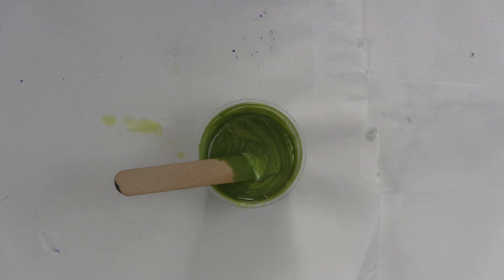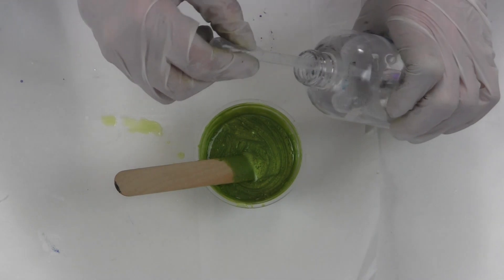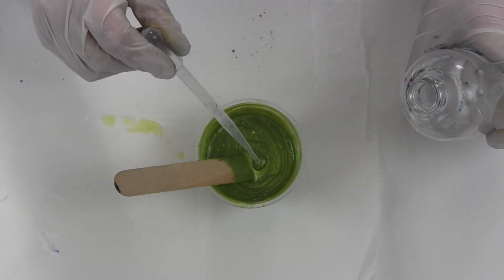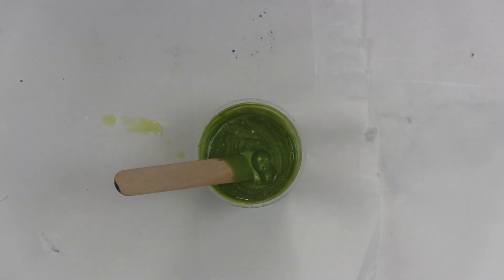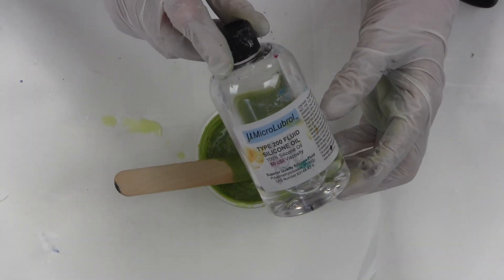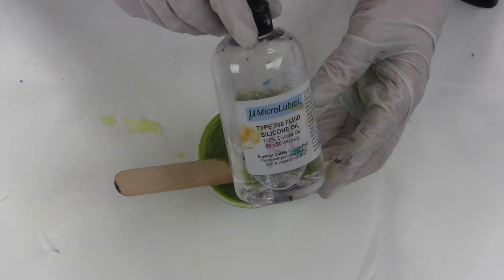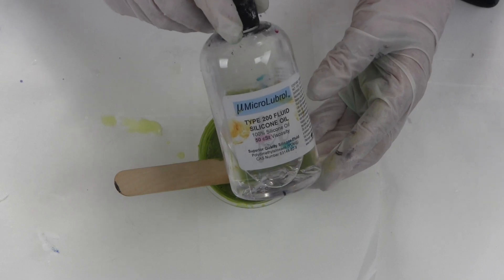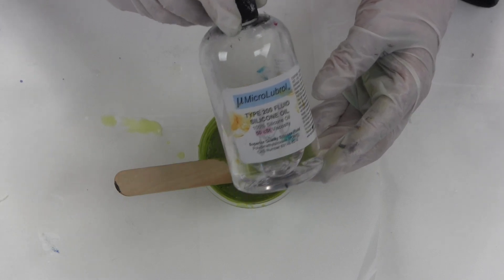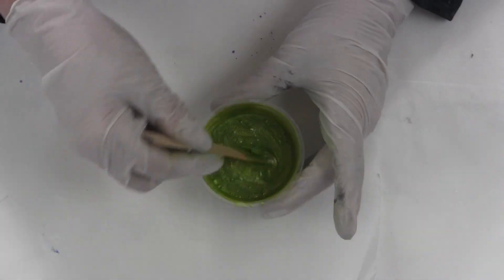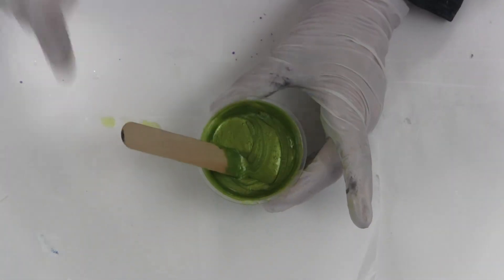I'm going to put in some treadmill oil with my handy-dandy pipette. I got this on Amazon - Macroluberotype 200 silicone. Love this stuff. Give it a proper stir.